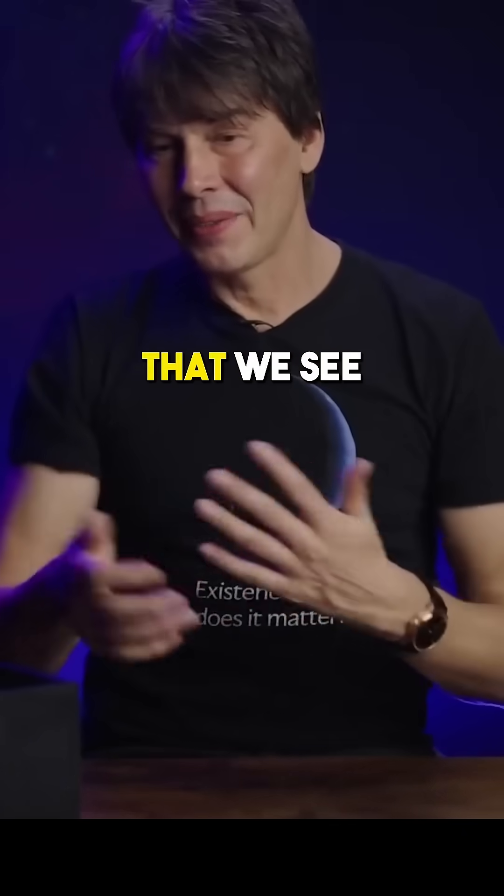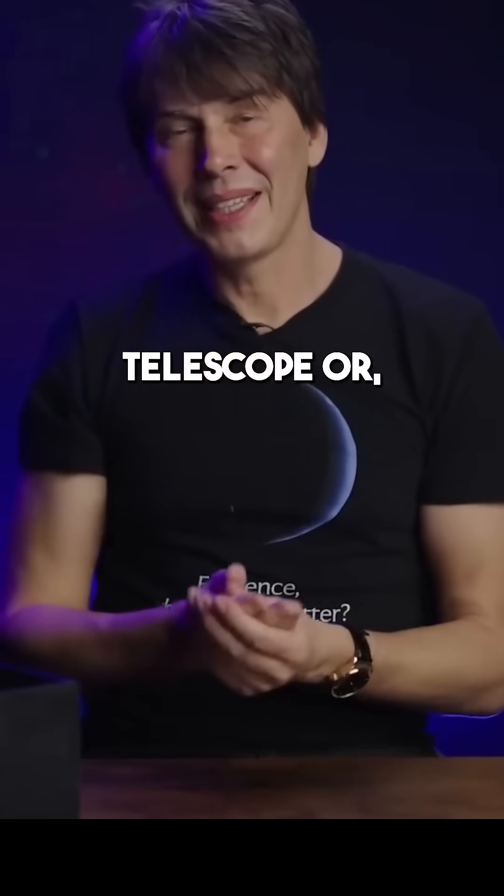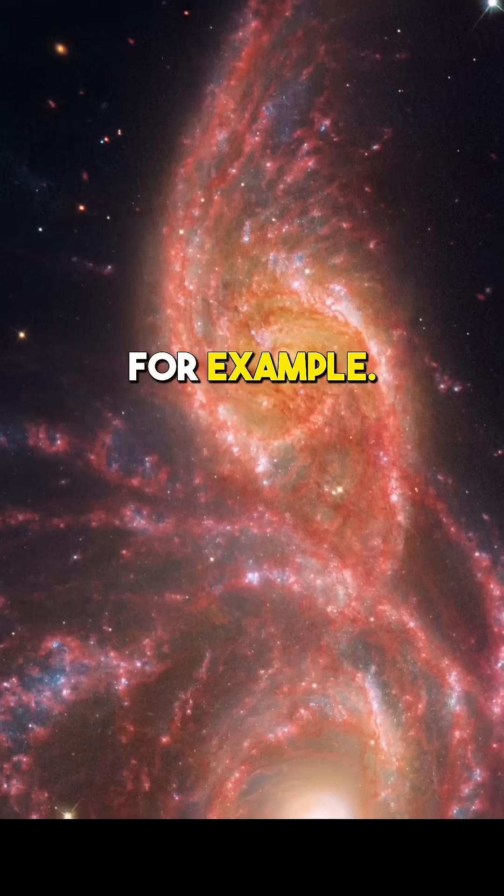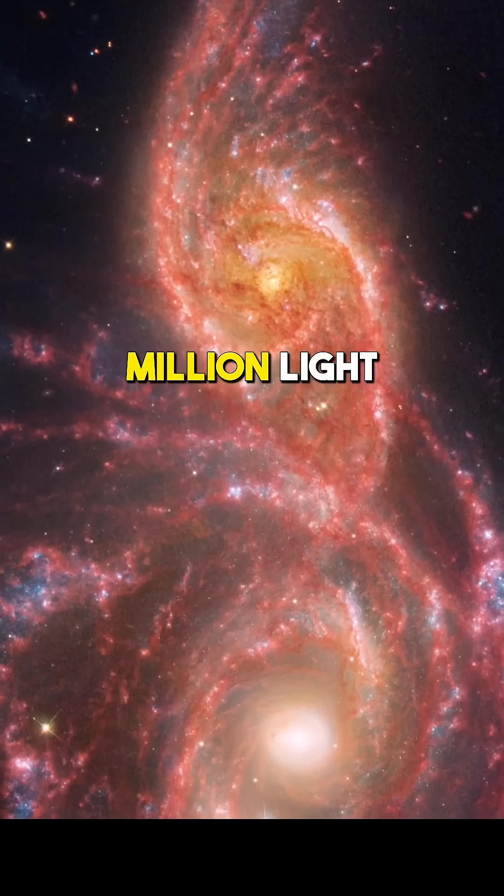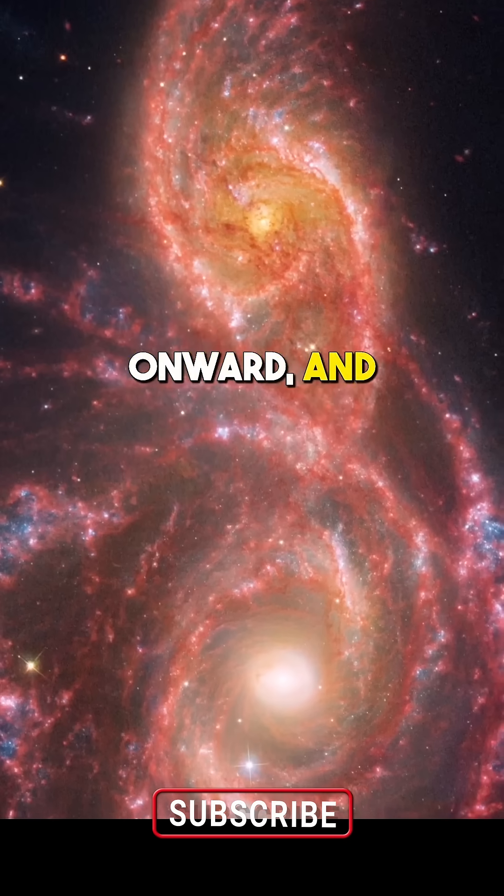When you start talking about galaxies that we see, beautiful images with the Hubble Space Telescope or the JWST, for example, you're looking at things that are 50 million light years away, 300 million light years away for a thing called Stephan's Quintet, and onwards.